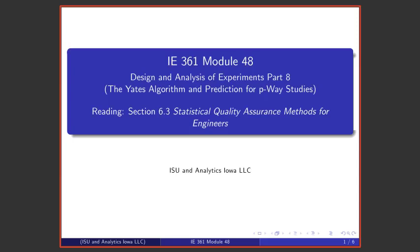Welcome to module 48 in this series of lectures on statistical quality assurance and statistical process improvement. We're talking about 2 to the p factorial studies. We've introduced the basic ideas and notation and have defined the main effects, two-factor interactions, three-factor interactions, and so on for p-way two-factor studies.